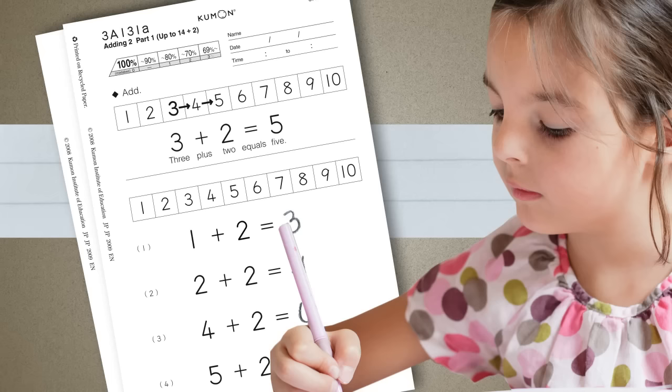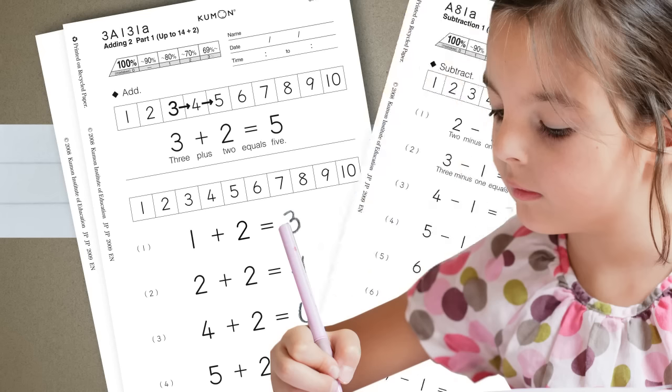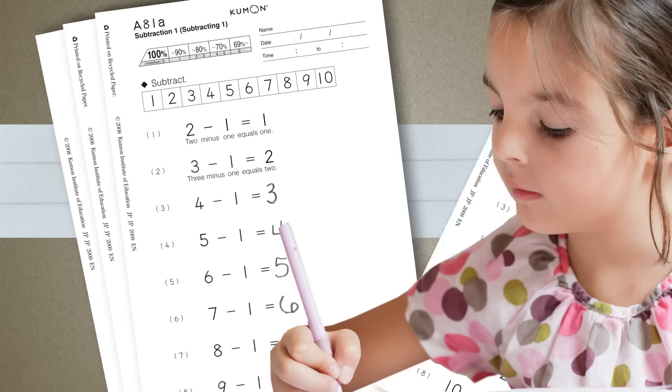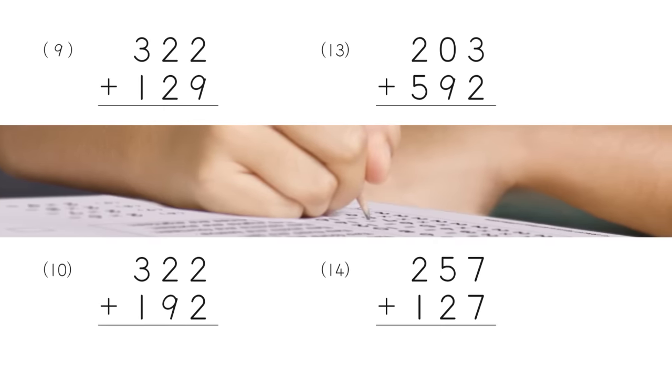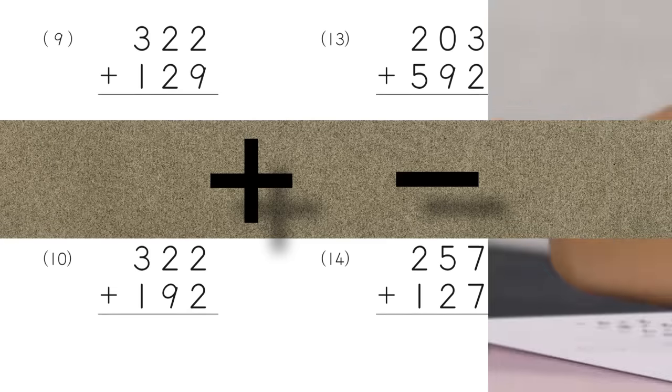After gaining strong addition skills, Emily started to learn subtraction, beginning with minus one and then minus two. In the process, she built confidence and strong number sequence skills to add and subtract numbers with ease.